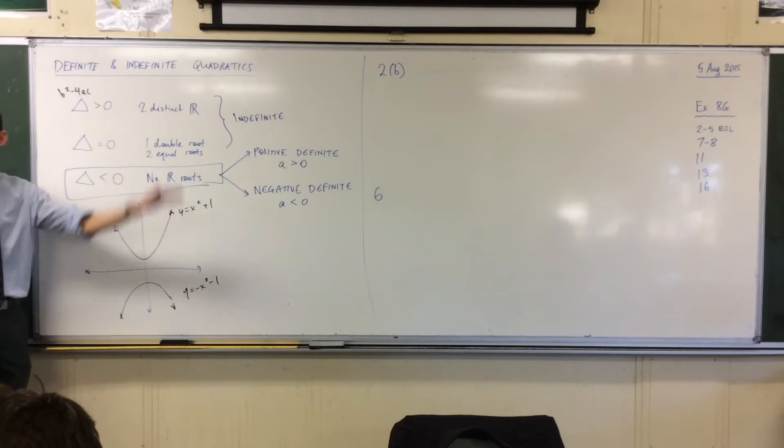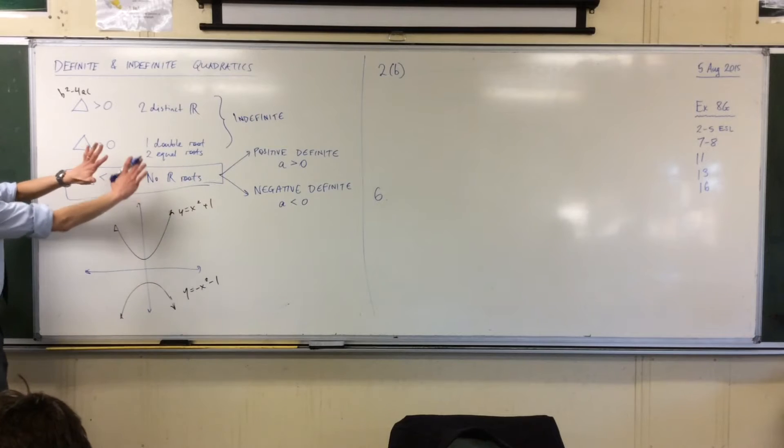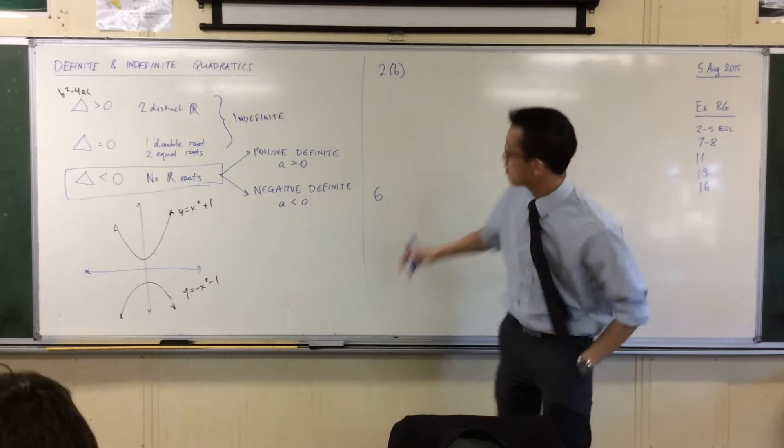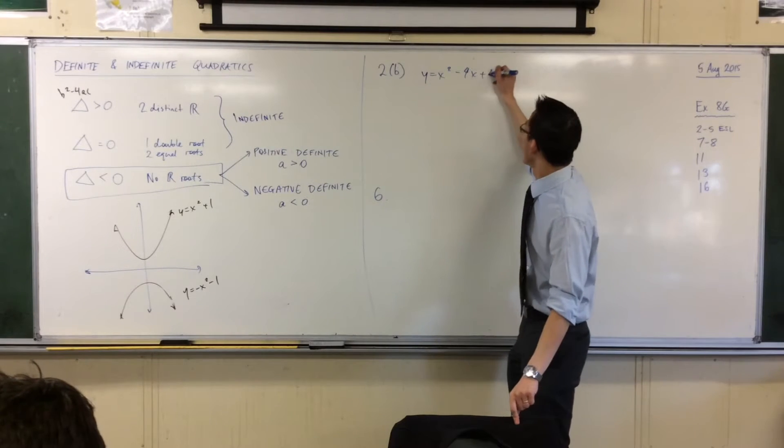All they want you to do is classify. They just want you to tell me, what is this quadratic? What kinds of properties does it match? So the particular one in 2b is y equals x squared minus 4x plus 4.